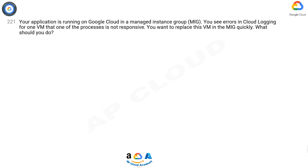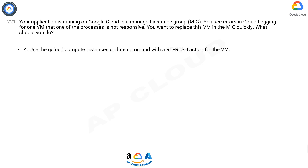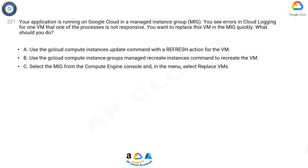Question 221: Your application is running on Google Cloud in a Managed Instance Group (MIG). You see errors in Cloud Logging for one VM, but one of the processes is not responsive. You want to replace this VM in the MIG quickly. What should you do?